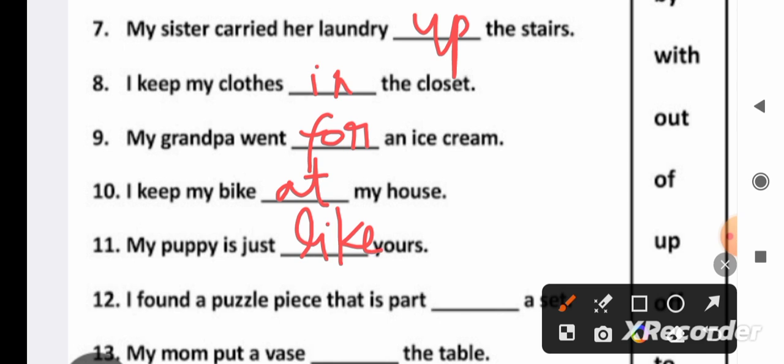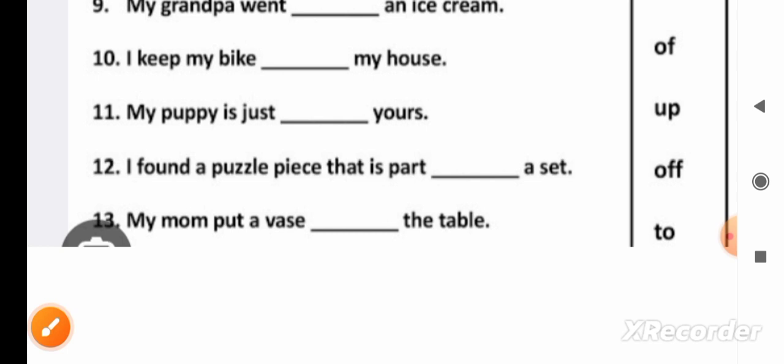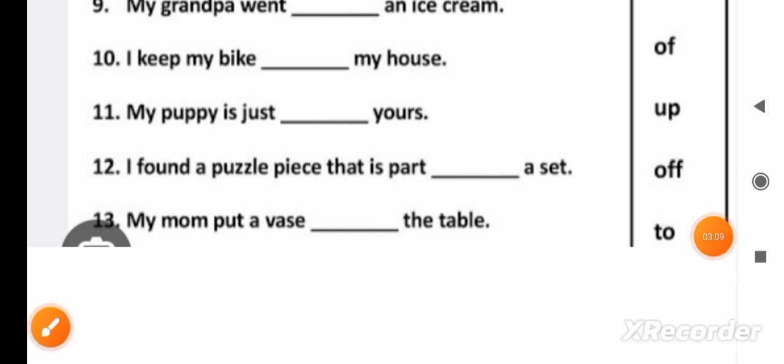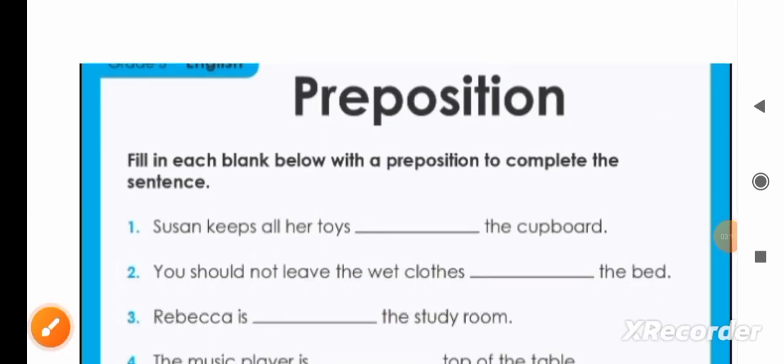My puppy is just like yours, it will be like. I found a puzzle piece that is a part of a set, it will be of. My mom put a vase on the table, it will be on. So we completed the second exercise.